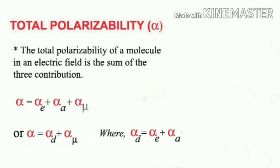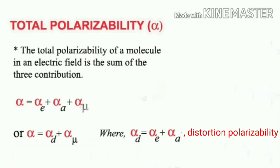The total polarizability of a molecule in an electric field equals the sum of contributions from all three types: alpha = alpha_E + alpha_A + alpha_mu. We can also write alpha = alpha_d + alpha_mu, where alpha_d = alpha_E + alpha_A is called the distortion polarizability.